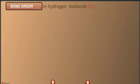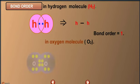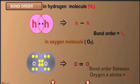In hydrogen molecule H2, bond order is equal to 1. In oxygen molecule O2, bond order is equal to 2.